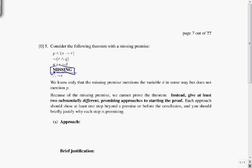We don't know what this missing premise is. And we've got a conclusion to the theorem, therefore not s. And this is all in propositional logic. We know only that the missing premise mentions the variable d in some way, but does not mention p. So it does mention d, and it doesn't mention p.